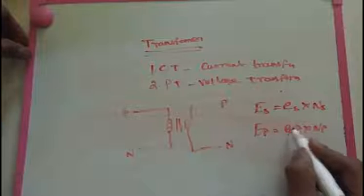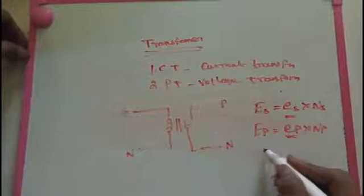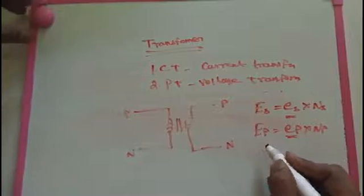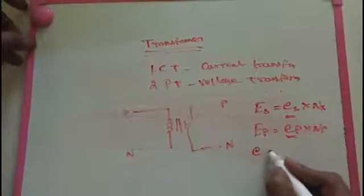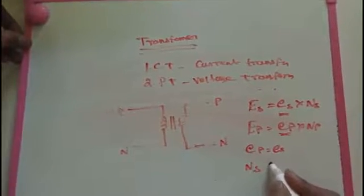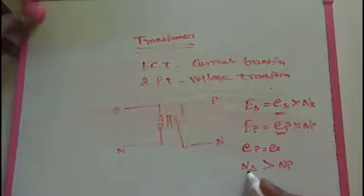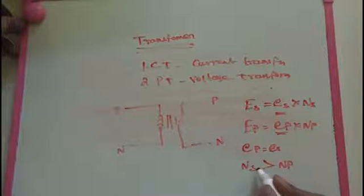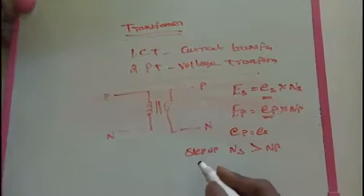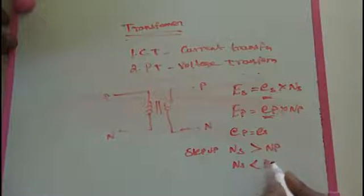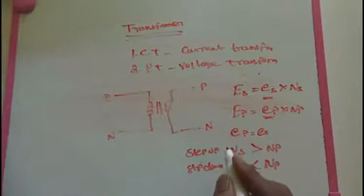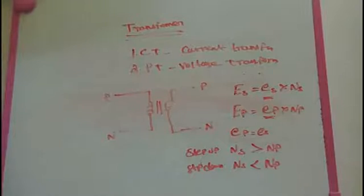The EMF doesn't change from primary to secondary — that's the concept. Ep and Es are the same in proportion. So here, only the number of turns Ns and Np can change. That means the number of turns in primary and secondary. So if the number of turns in secondary is higher — step-up transformer. If the number of turns in secondary is lower than primary — step-down transformer. This is the main purpose of transformer working.